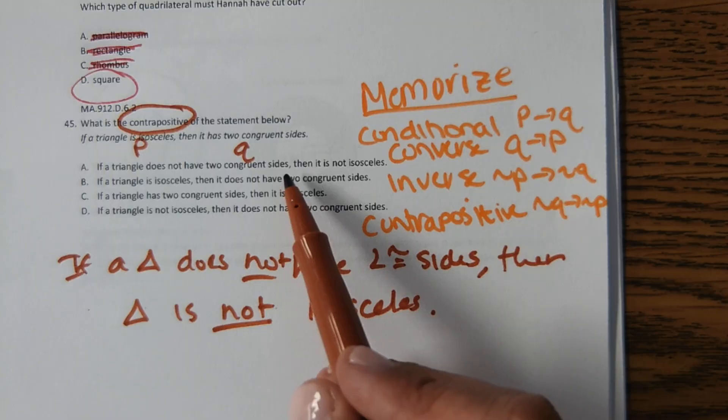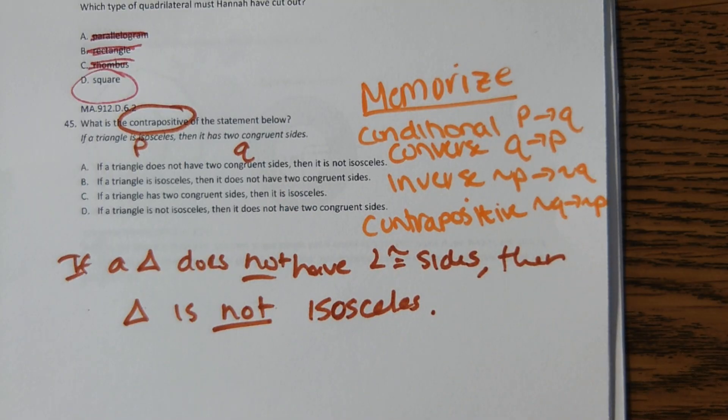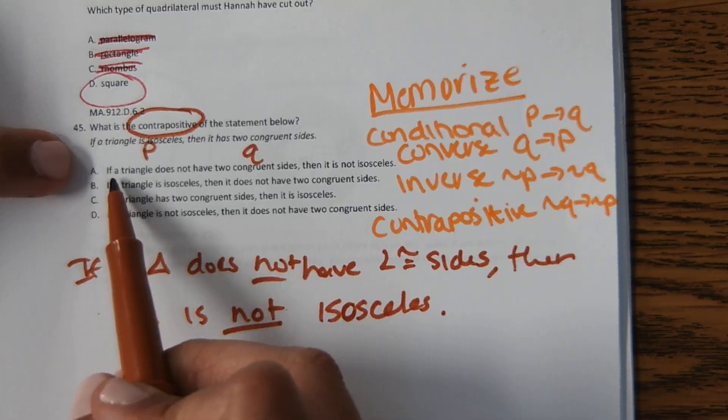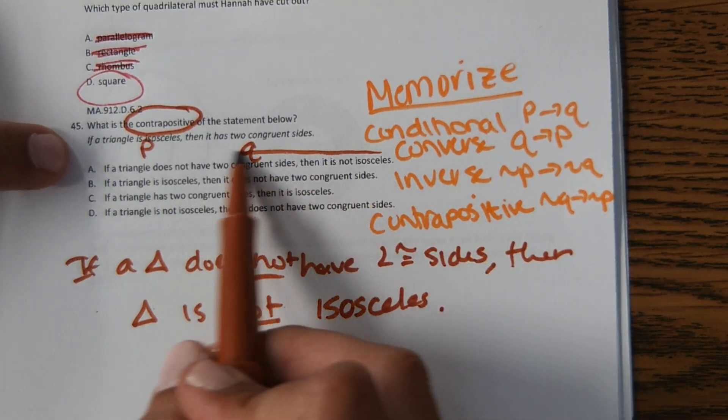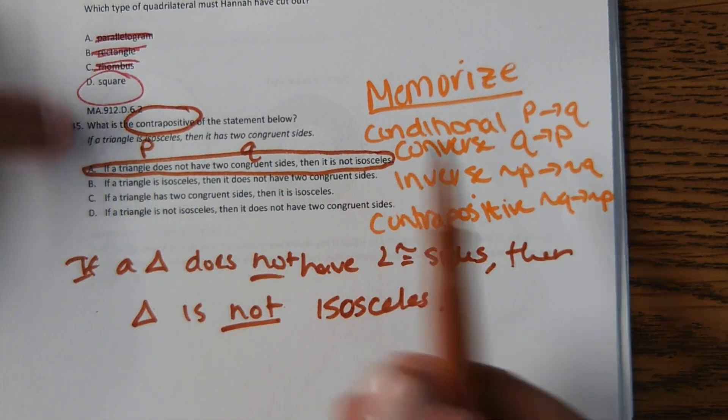I didn't look at the answer choices because I didn't want it to confuse me or make me second-guess myself. So now that I have the answer, I'm just going to match it to the answer choices. If a triangle does not have congruent sides, then it's not isosceles. It happens to be the first answer.